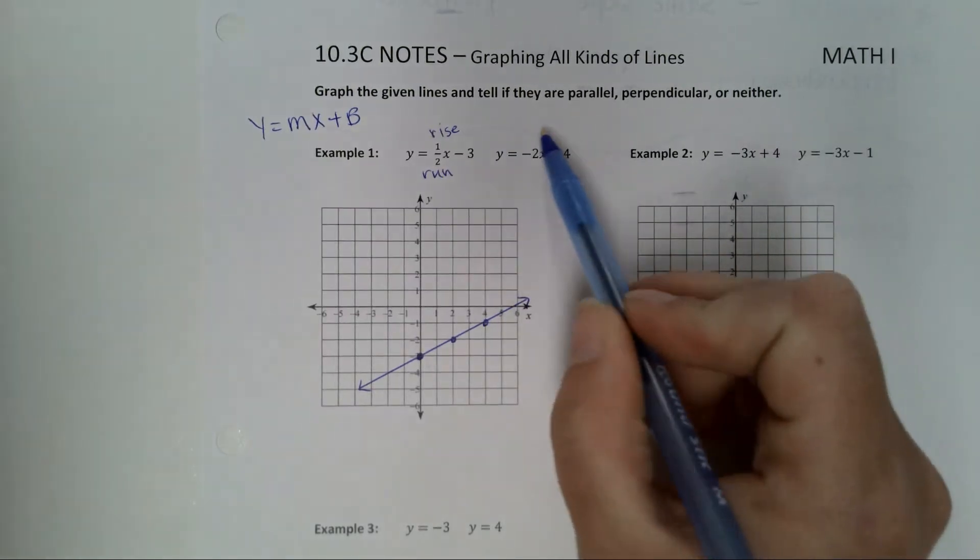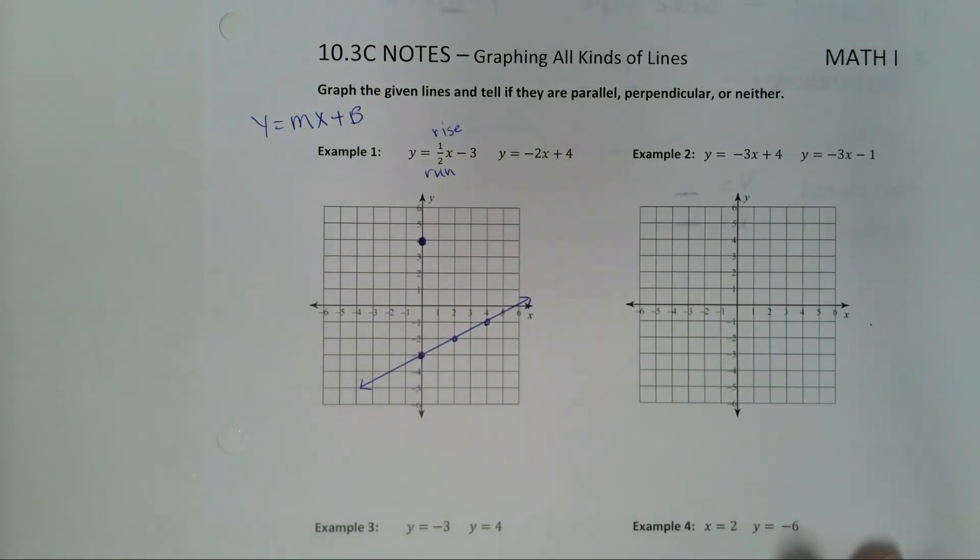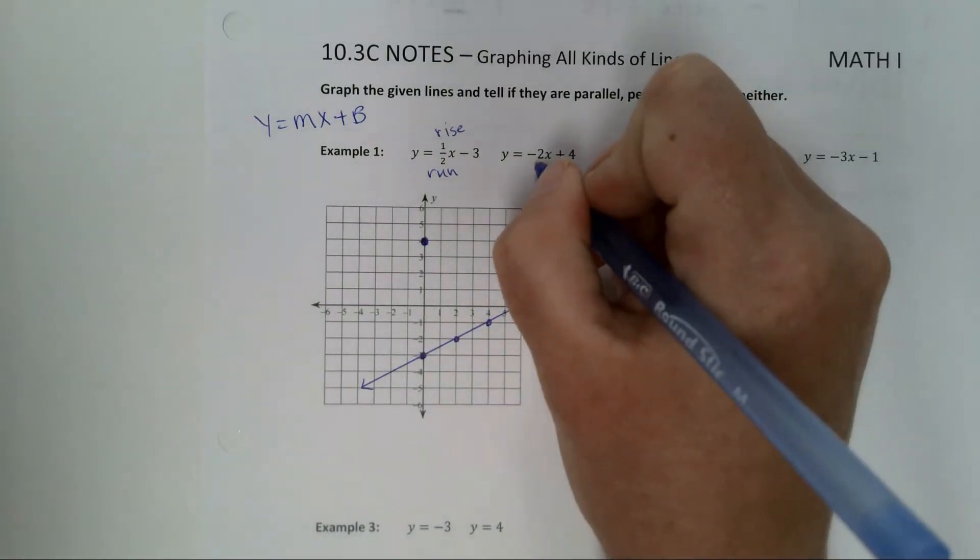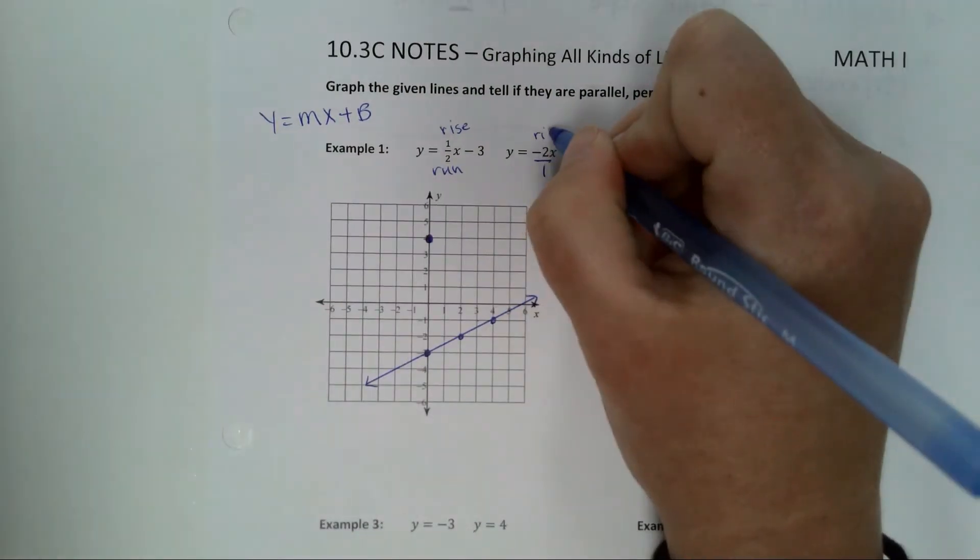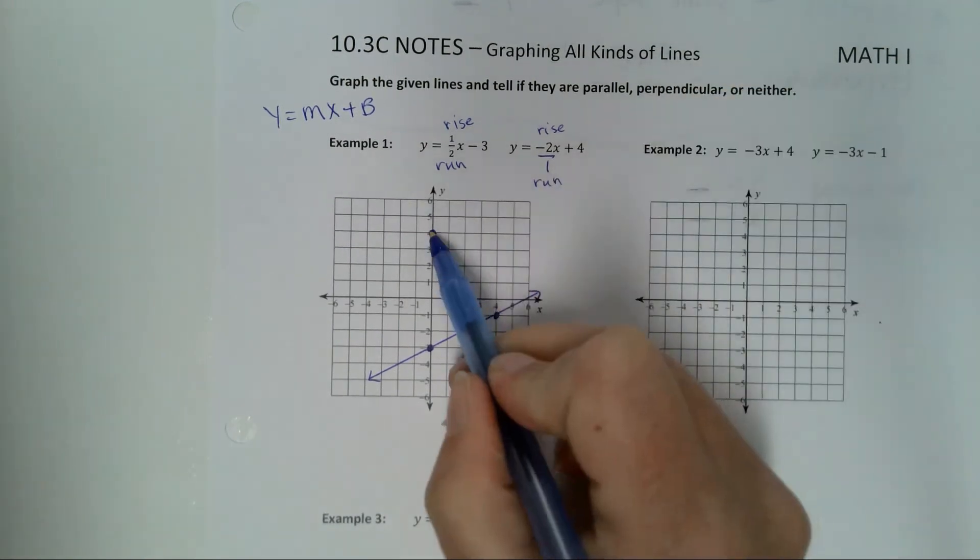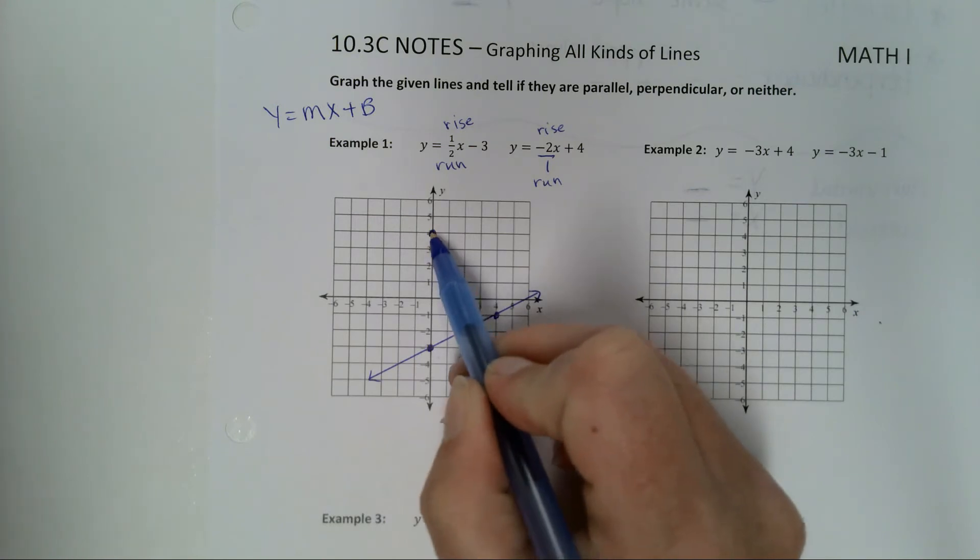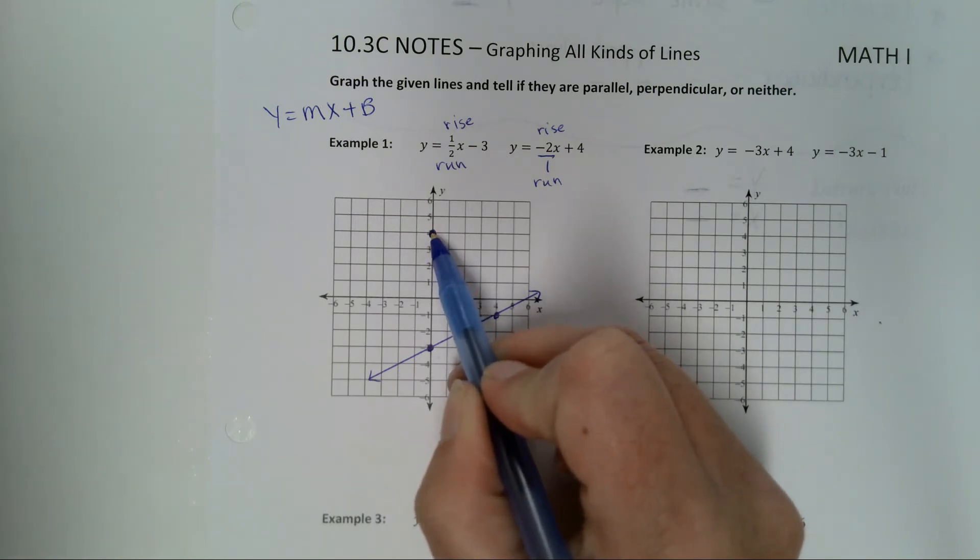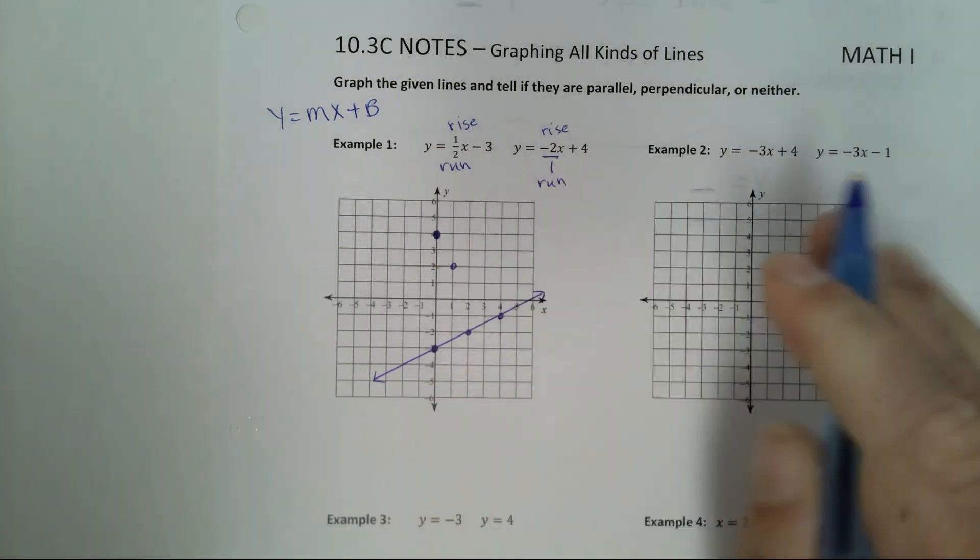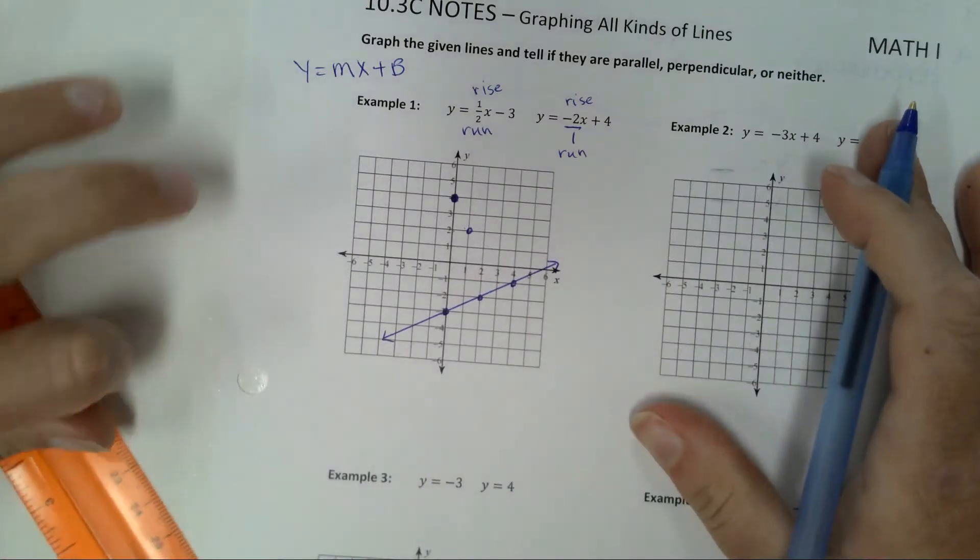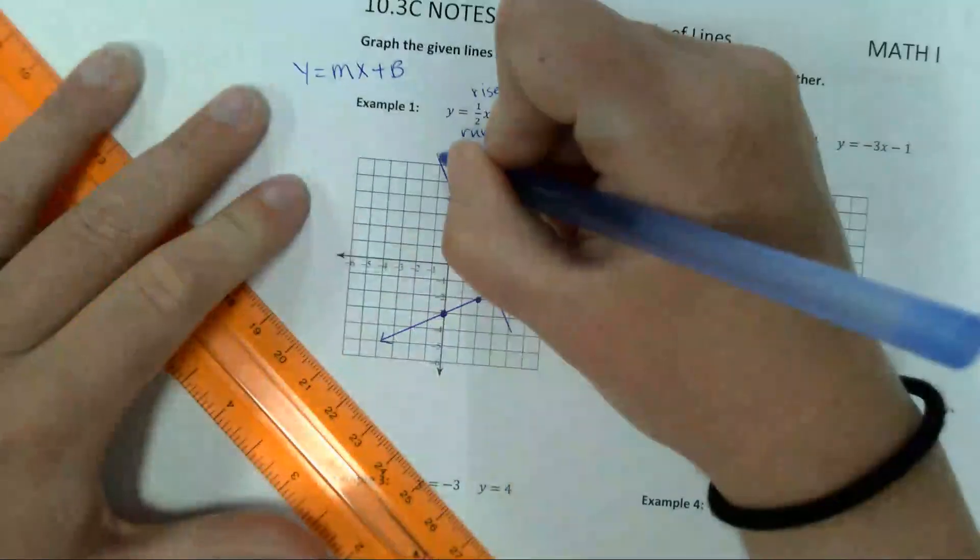Let's graph the second one. What's my y-intercept? 4. We start at 4. What's the slope of this second line here? We are going to turn it into a fraction by putting it over 1. So we are going to rise negative 2 and run 1. How do I rise negative 2? You go down 2. Remember when you count, you don't start counting until you actually move. And then I run 1. Always run to the right. There you go. And then connect them. We've got our second line.